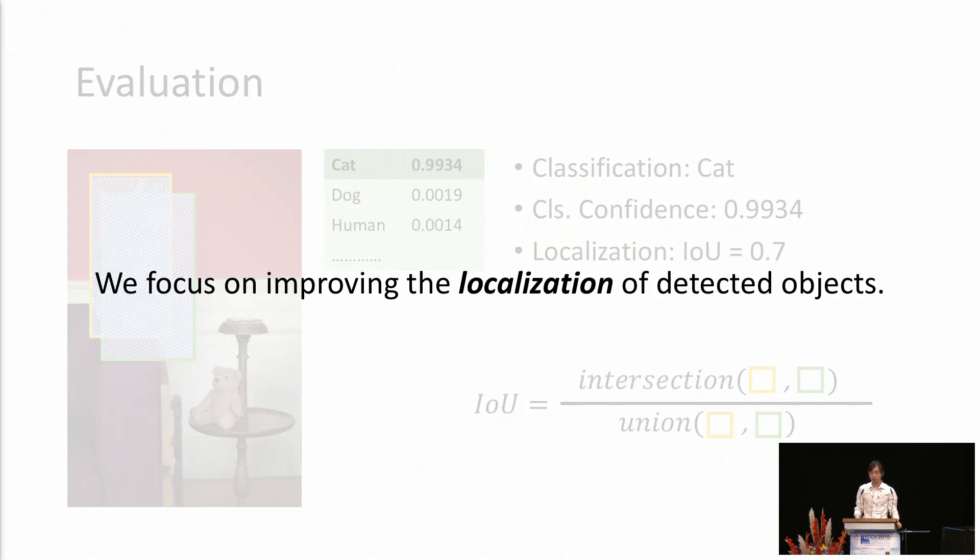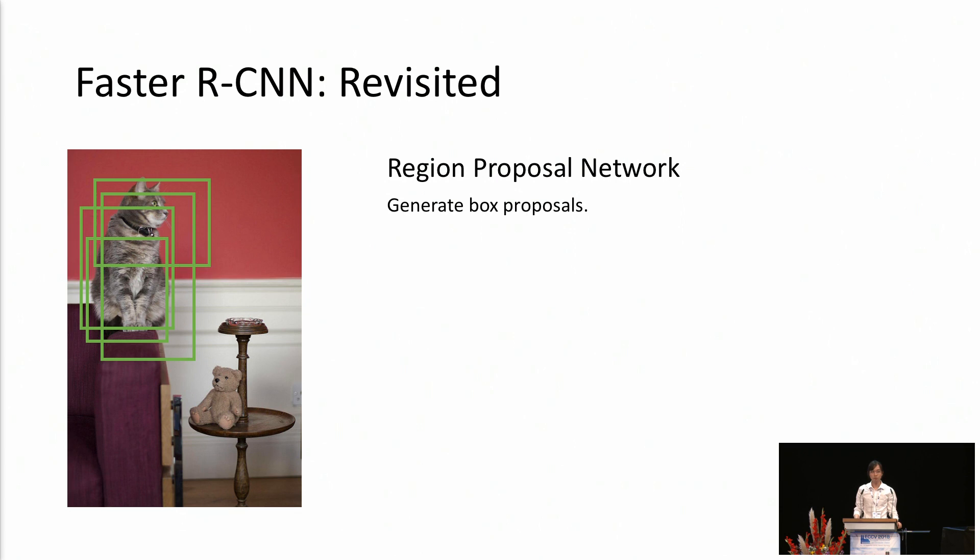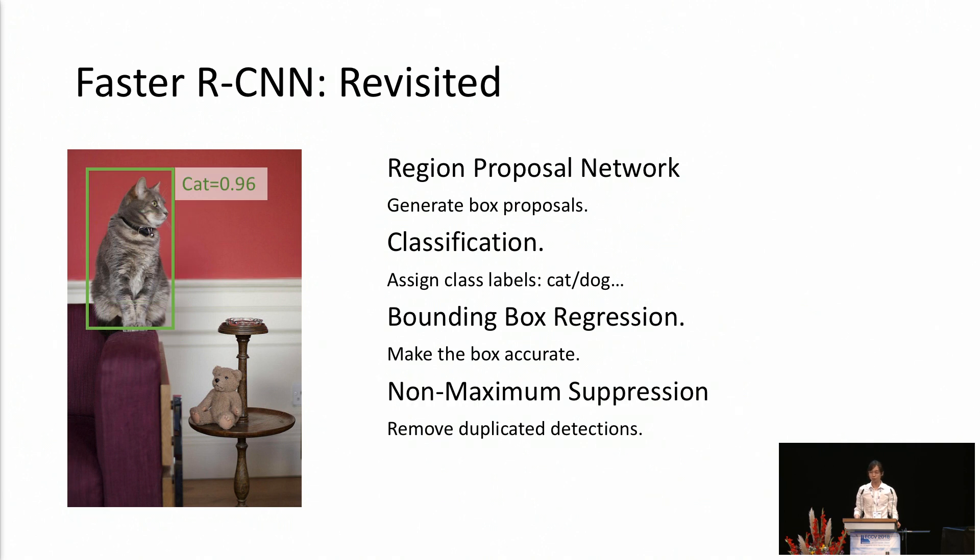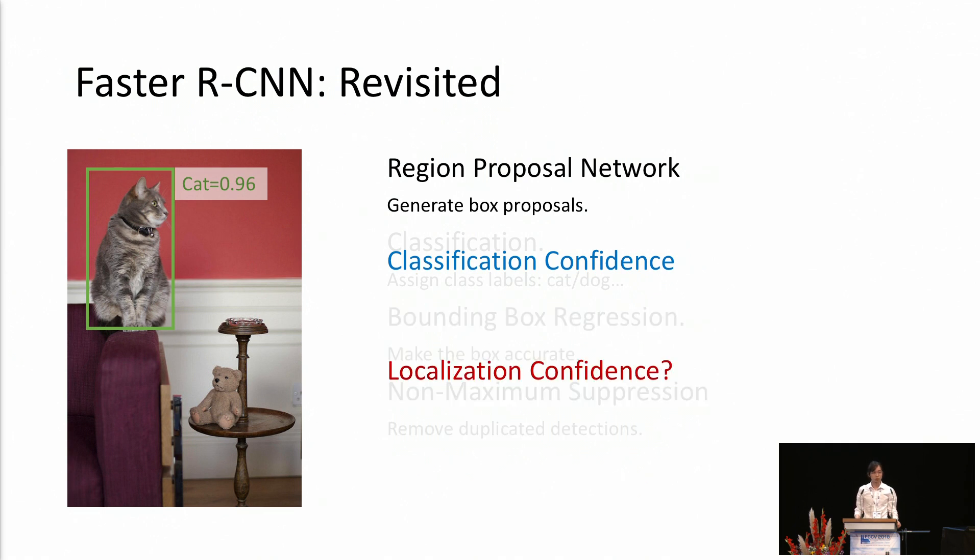Here, we focus on improving the localization of the detected objects. To begin with, we revisit the Fast R-CNN pipeline for object detection. It begins with generating box proposals using a region proposal network, and then we assign class labels for each box. Next, we make the detected bounding box more accurate by an algorithm called bounding box regression. Finally, to remove duplicate detections for the same object, we apply an algorithm called non-maximum suppression. Here, the classification confidence naturally exists when we are doing classification. However, we may find that the localization confidence here is missing.